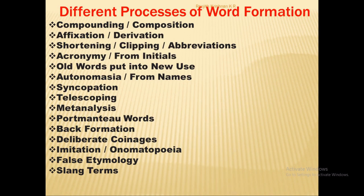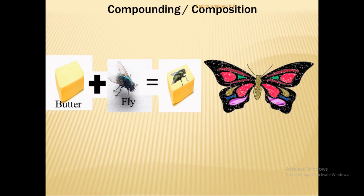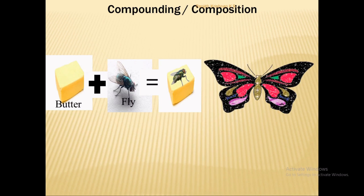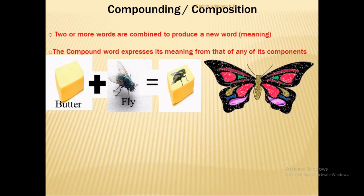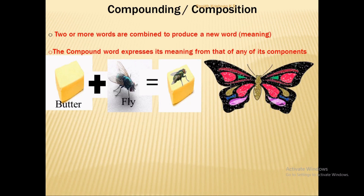We'll start from the first one: compounding, otherwise known as composition. Two words are combined to form a new word — for example, 'butter' and 'fly' give us the new word 'butterfly.' Compounding is the combination of two words to produce a new word or meaning, and the compound word expresses a meaning distinct from any of its individual components.